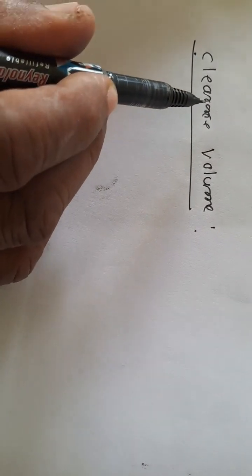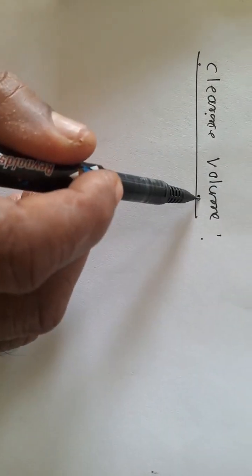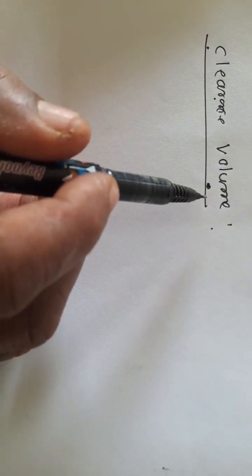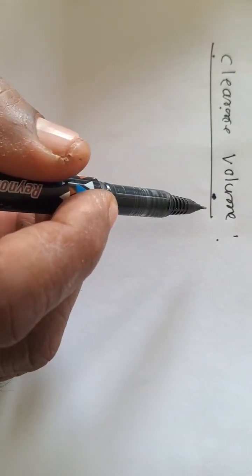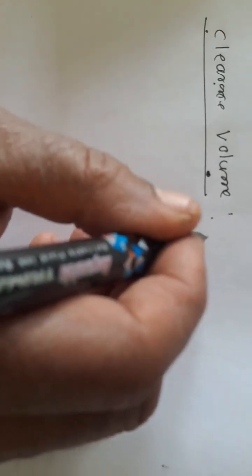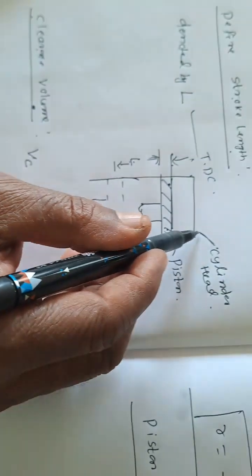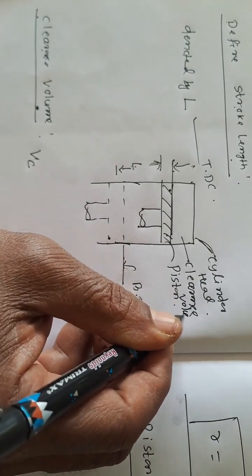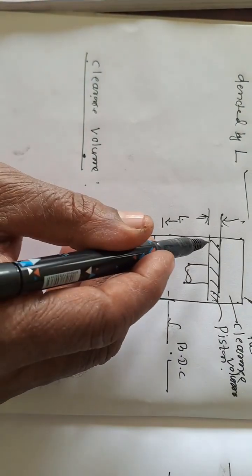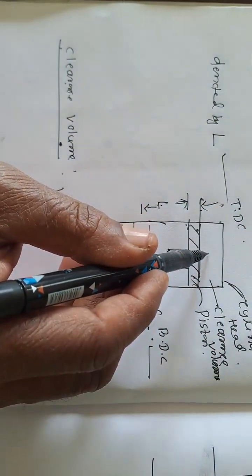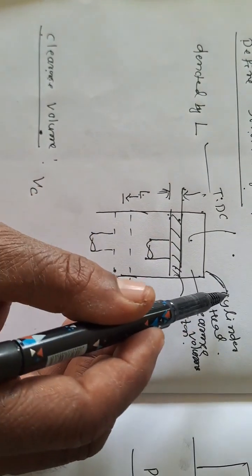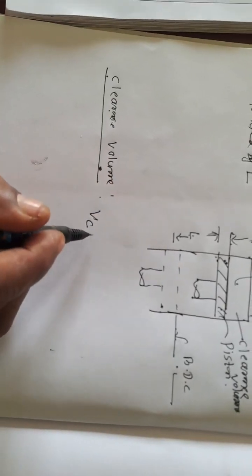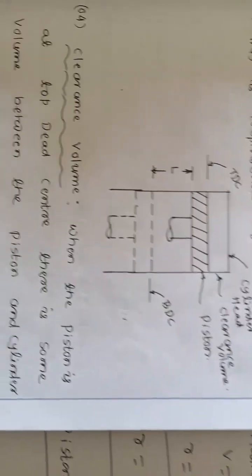What is clearance volume? When the piston is at top dead center, there is some volume or gap between the piston and cylinder head. This is known as clearance volume and it is denoted by Vc. This is the cylinder head, and this is the clearance volume.